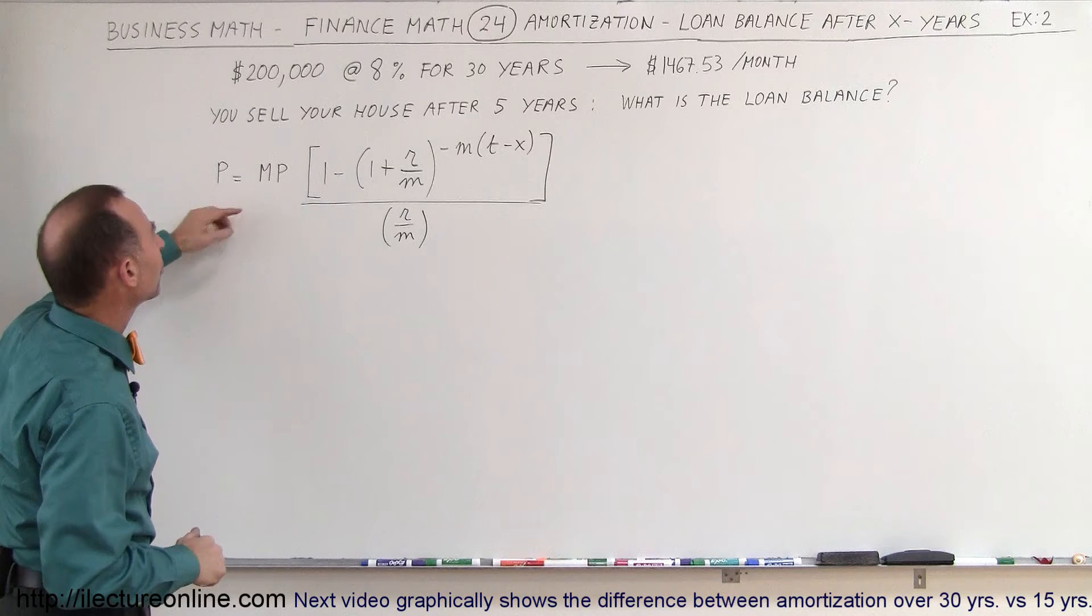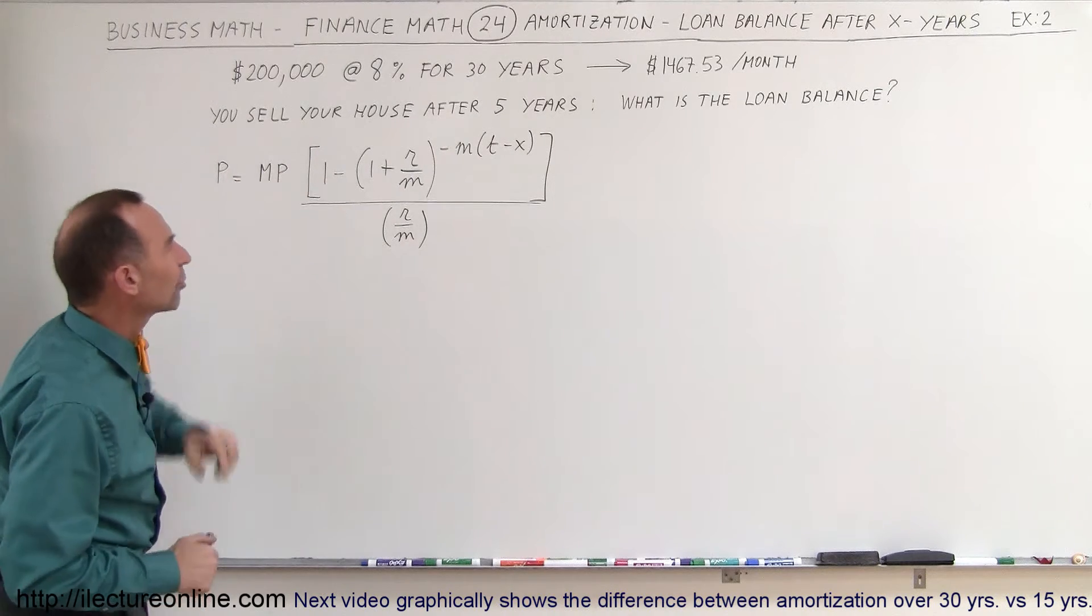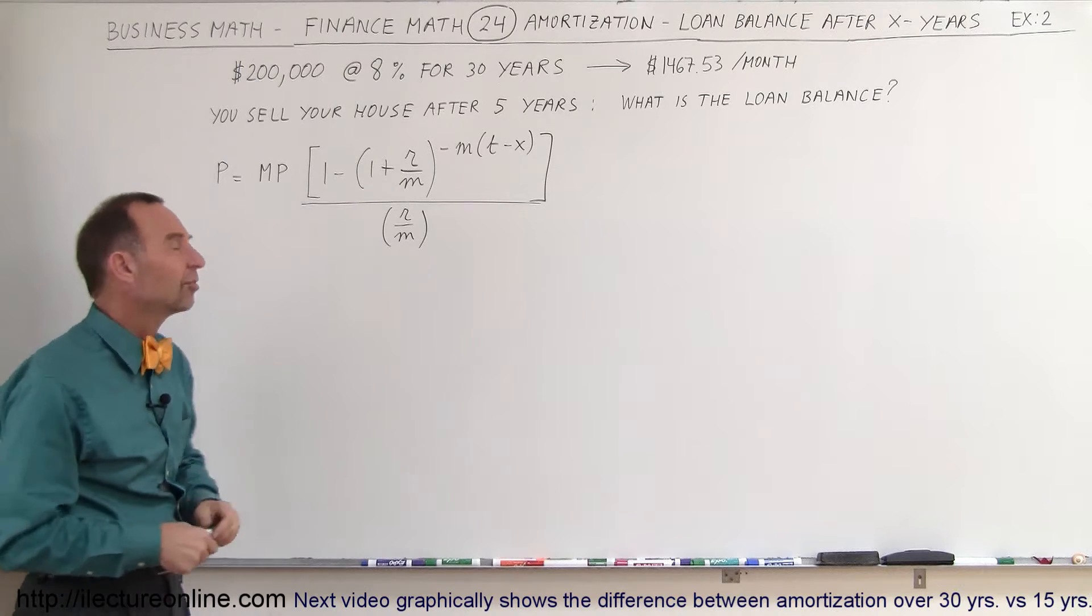All right, so here's the equation to figure out the principal. It's equal to the monthly payments times the rest of the equation. Let's plug in some numbers and see what we get.